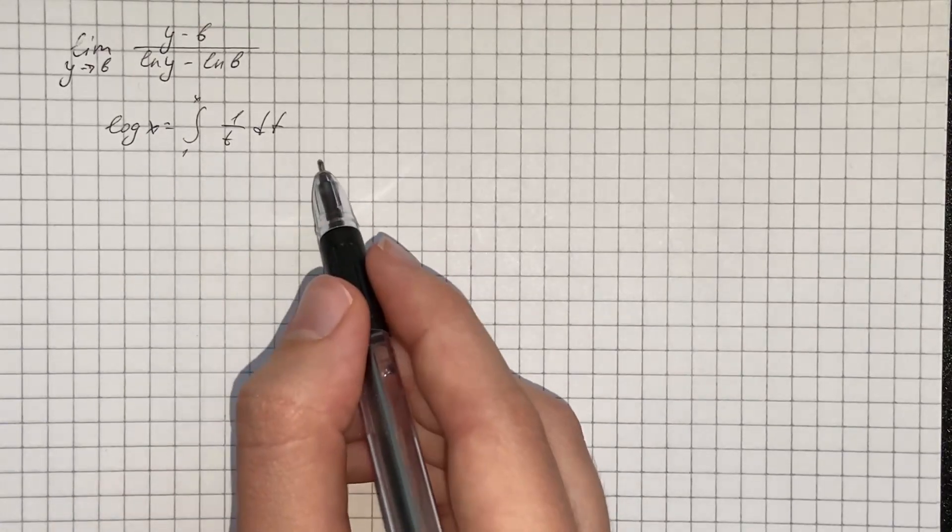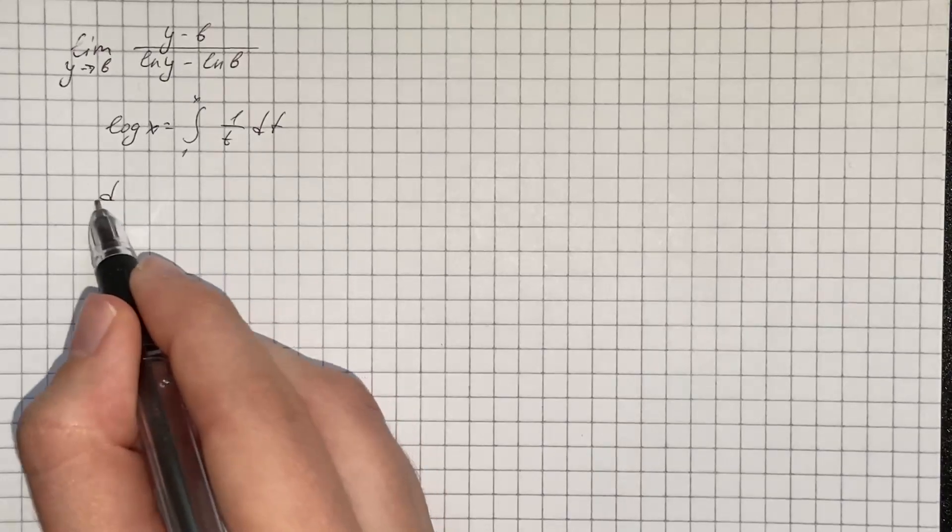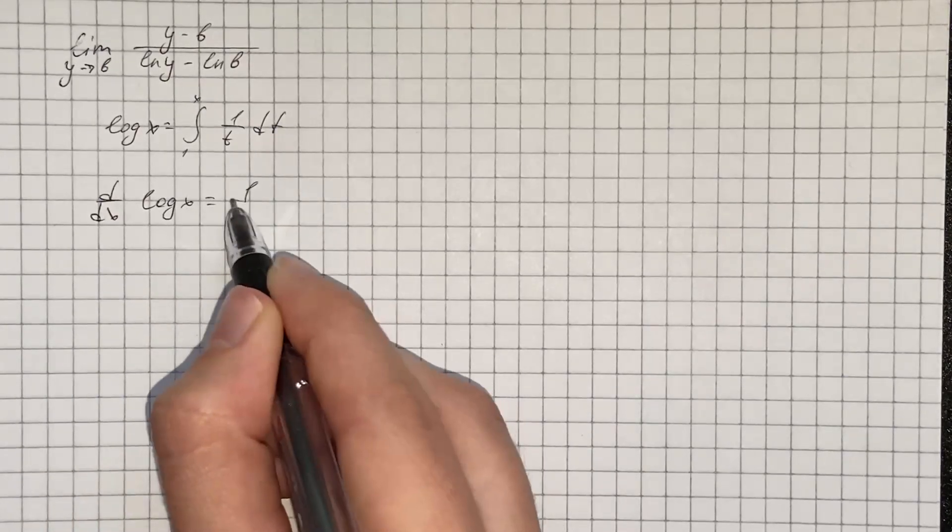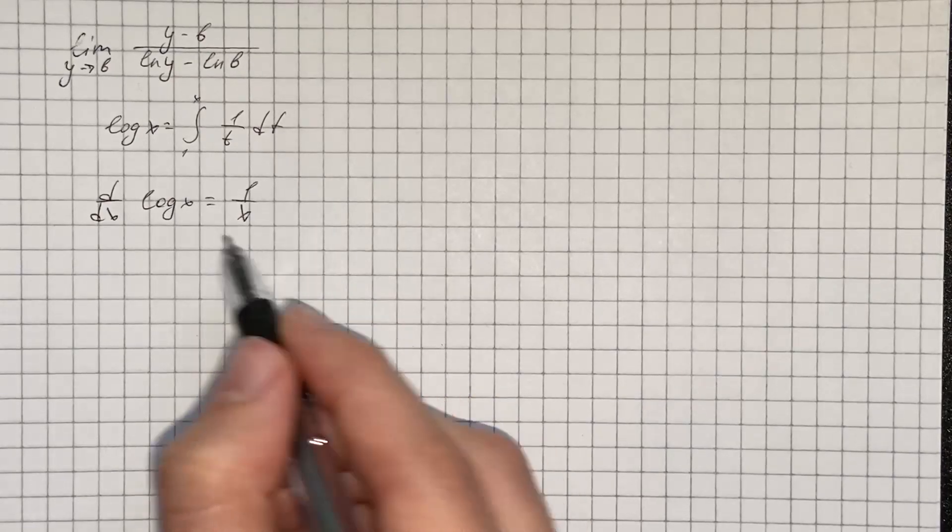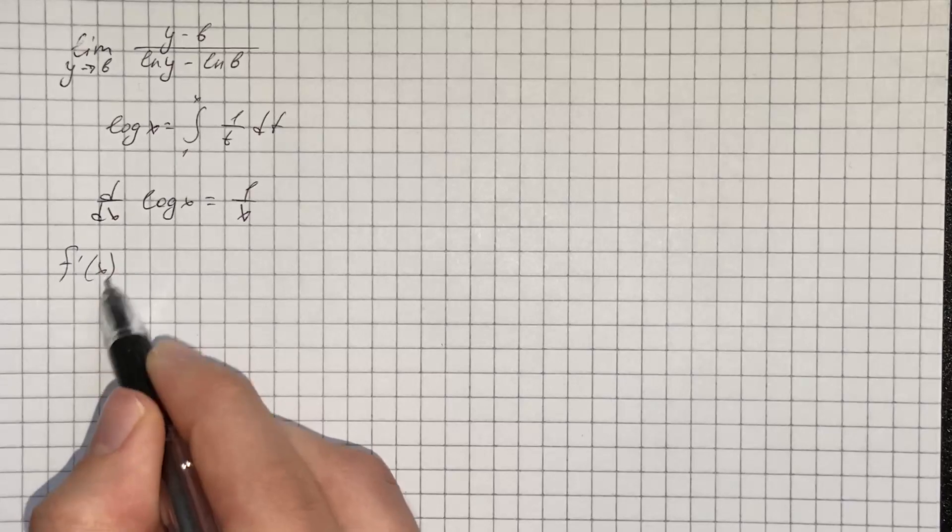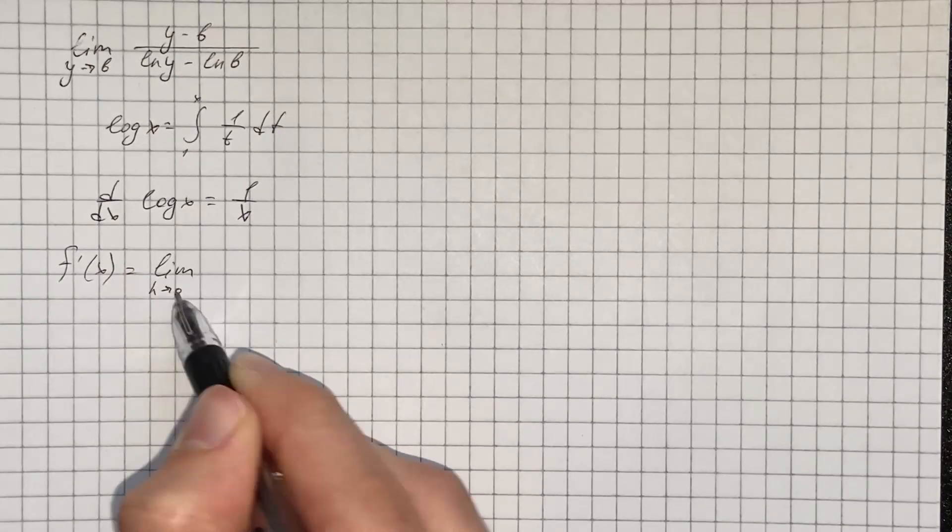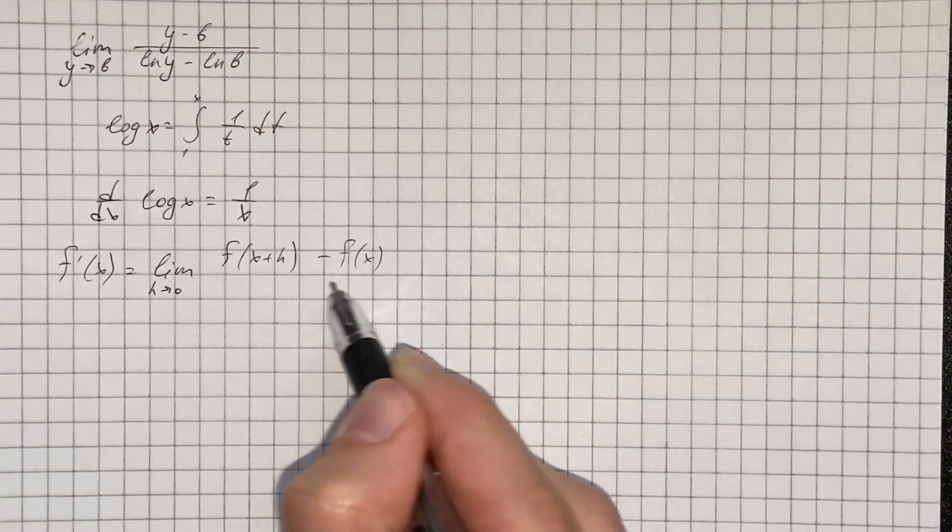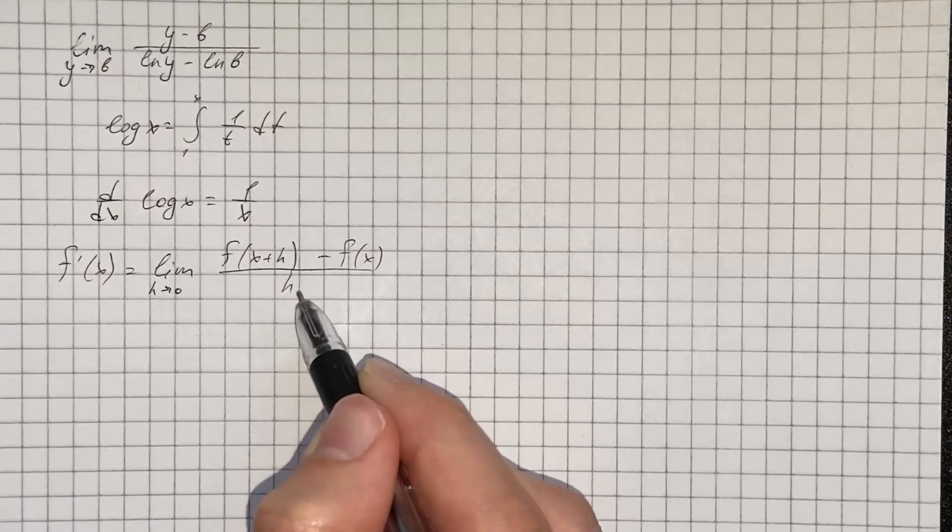So by the fundamental theorem of calculus we have the derivative with respect to x of the log of x is 1 over x. So we have the derivative of f of x equals limit as h goes to 0 of f of x plus h minus f of x over h.